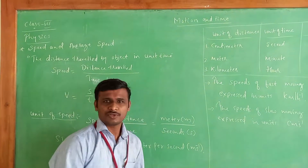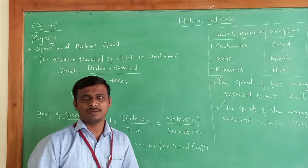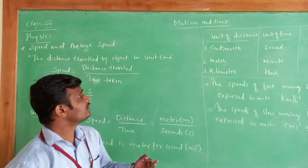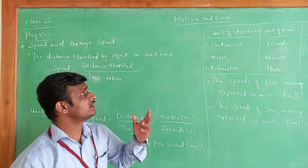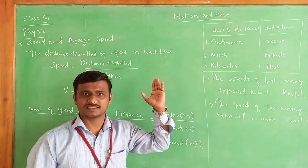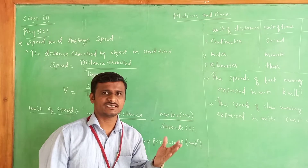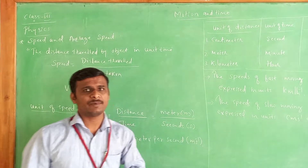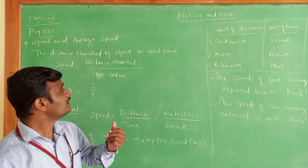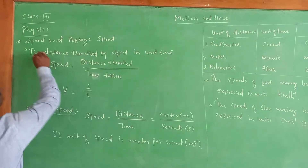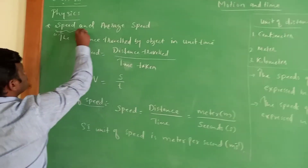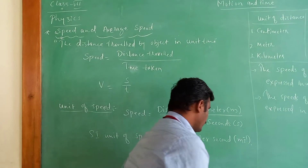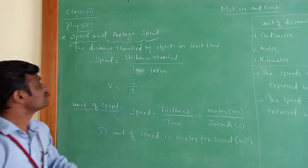Last class we discussed problems on the simple pendulum. So now in this class we are going to discuss the same chapter — Motion and Time of Class 7 Physics. In this class we are going to discuss what is speed and average speed.